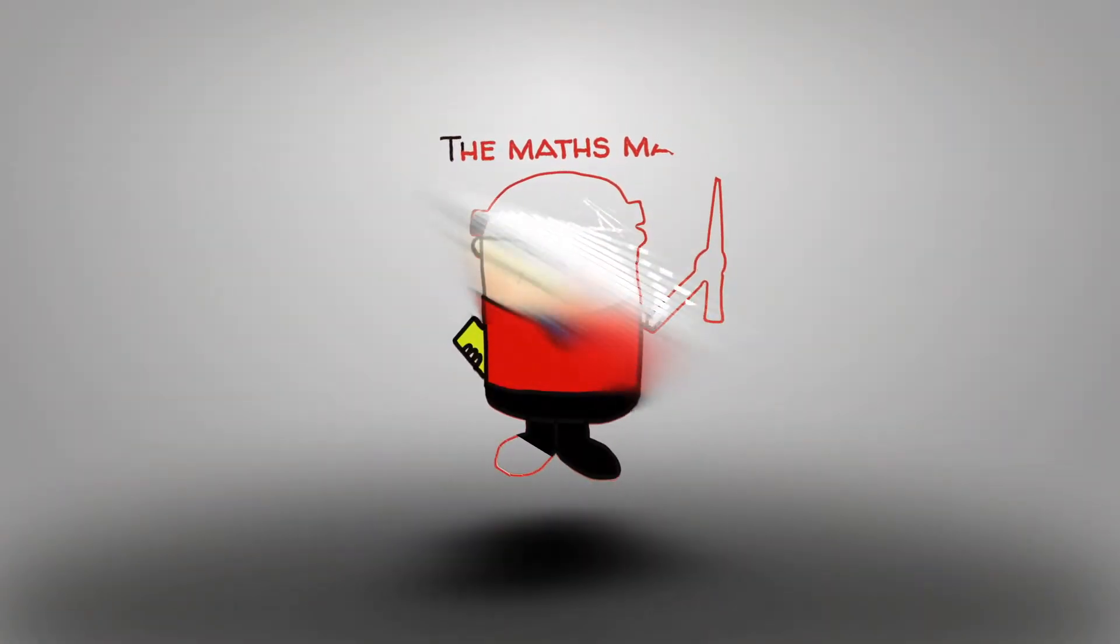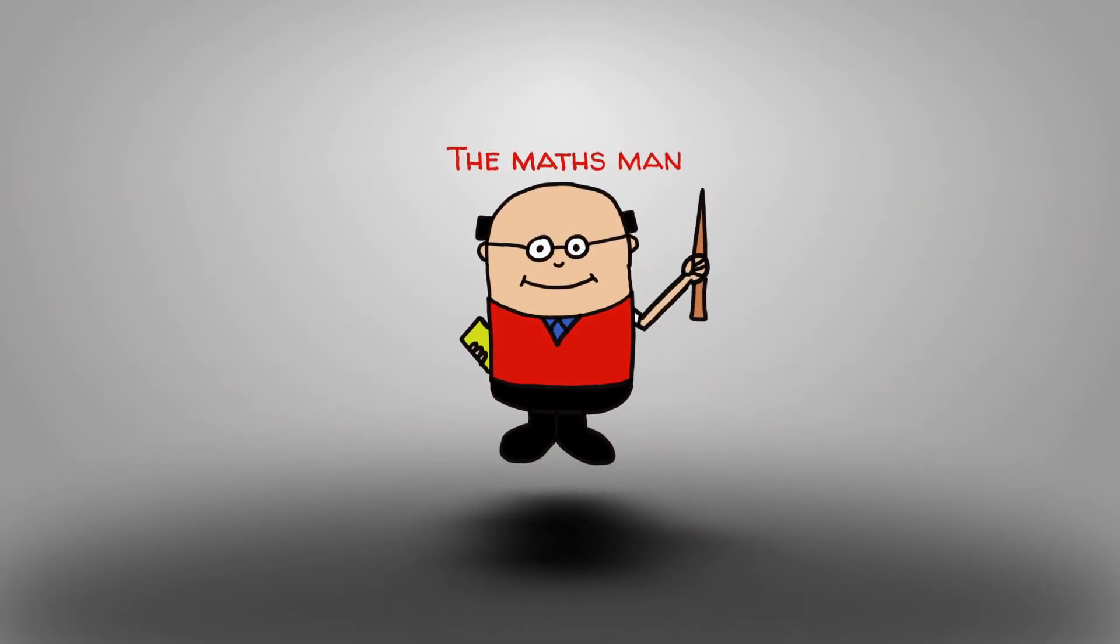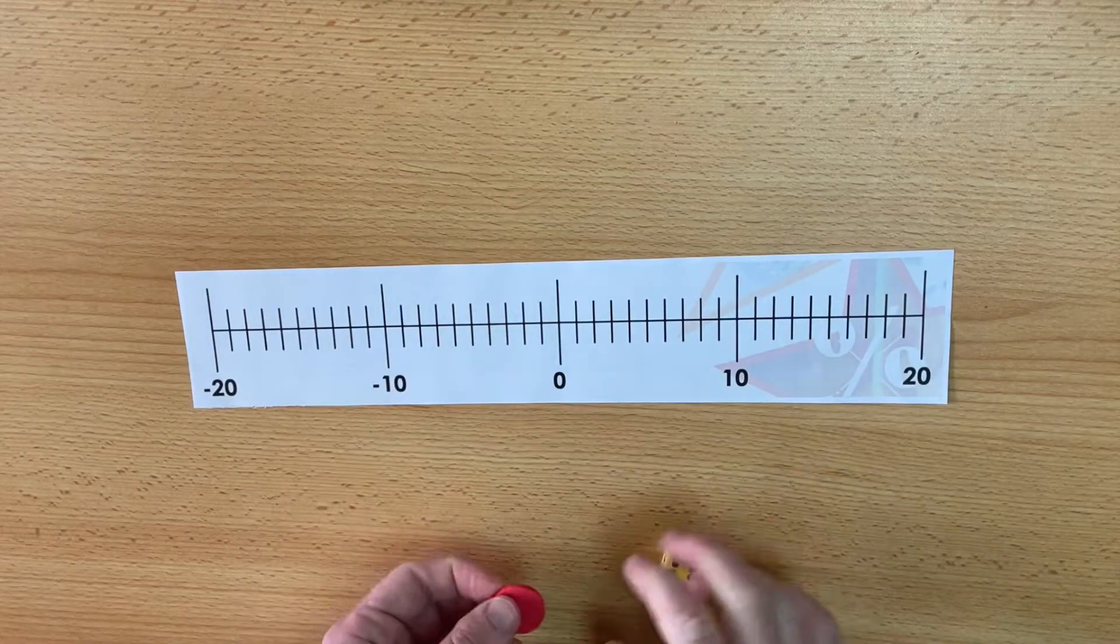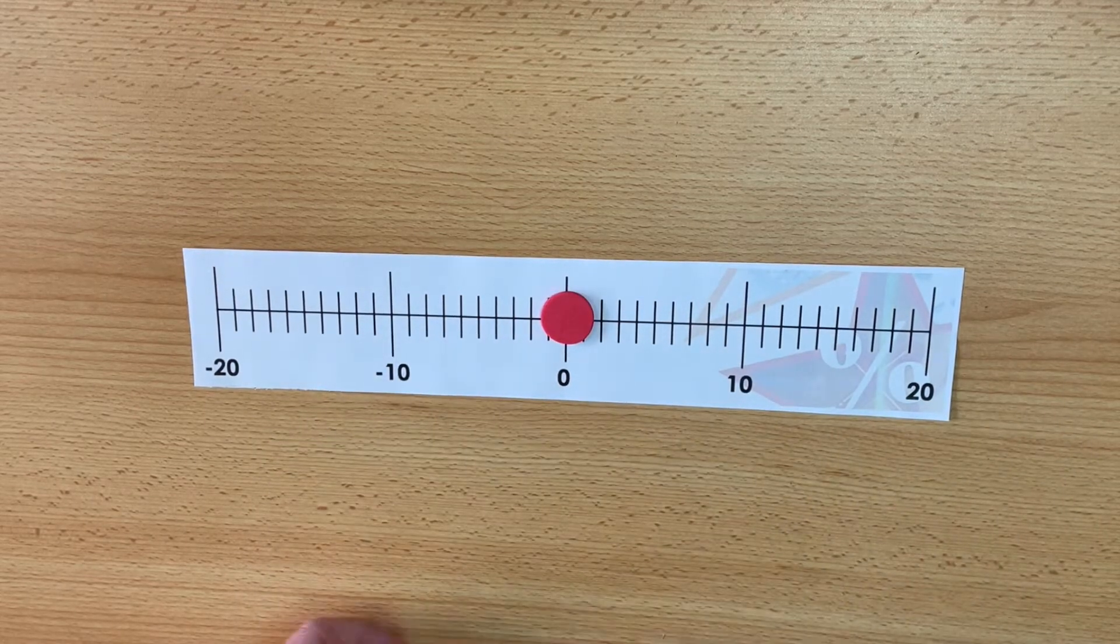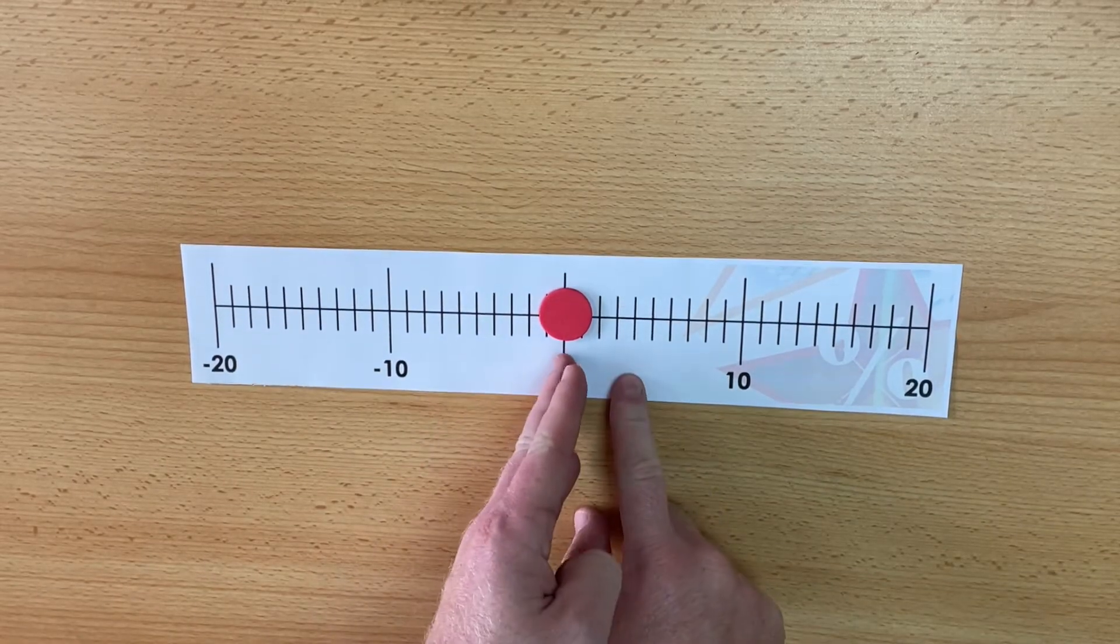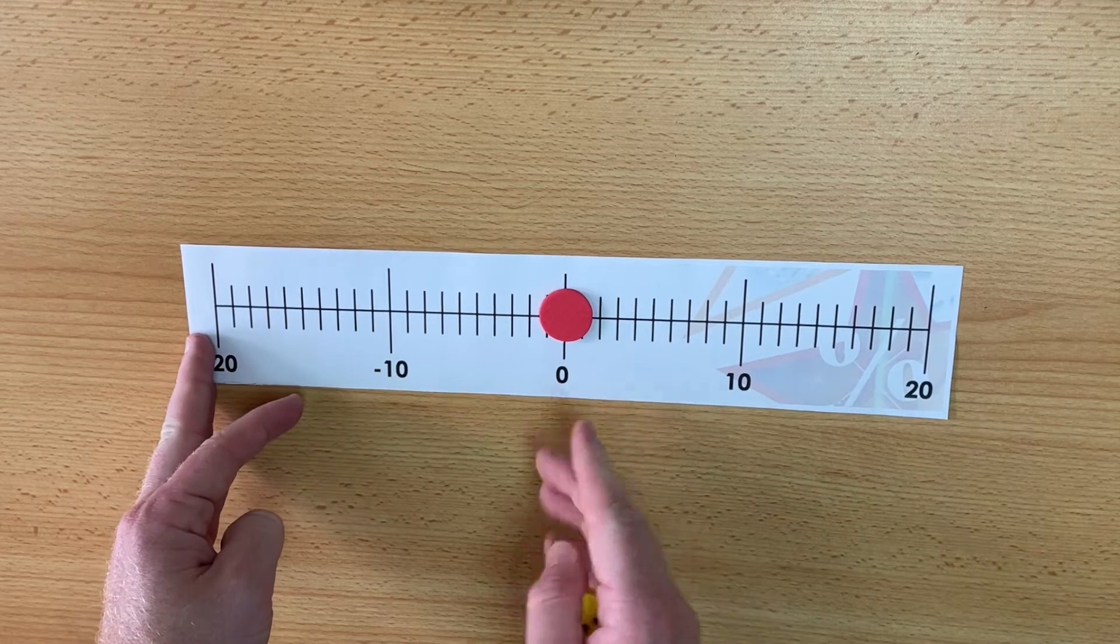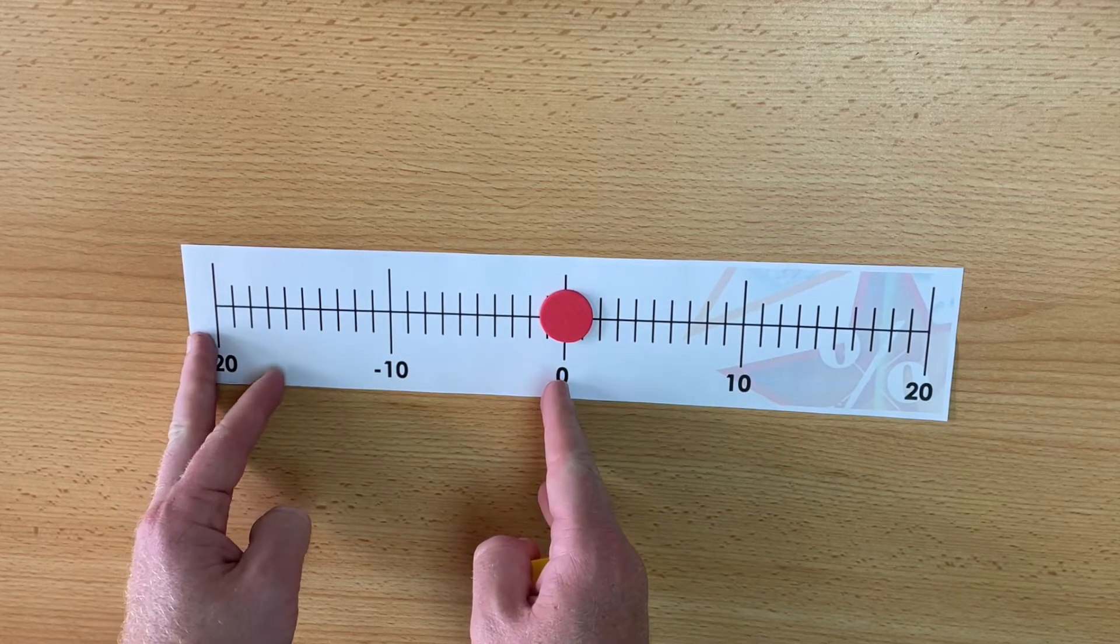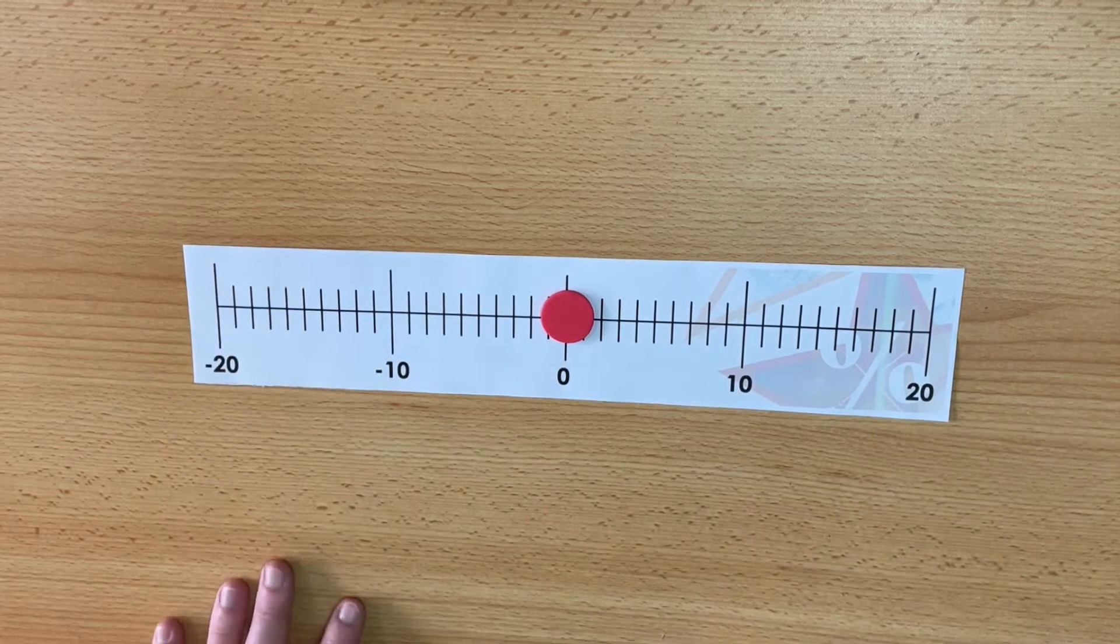Let's do it, let's do it now. So to begin the game you put the counter on the zero marker and this is a game for two players. One player will be trying to get the counter all the way to negative 20 and the other player will be trying to get the counter all the way up to positive 20.